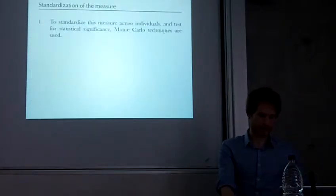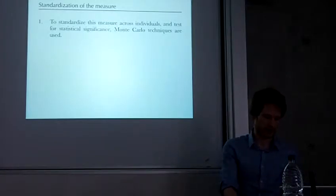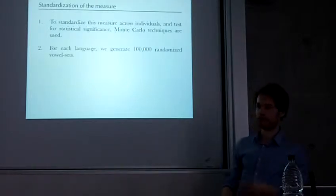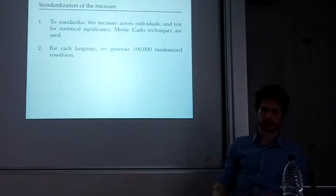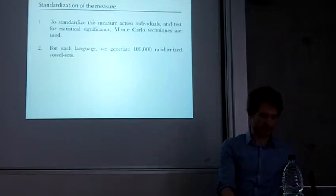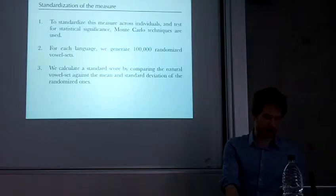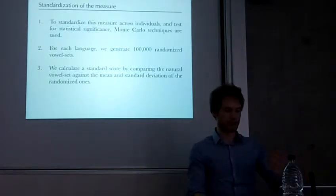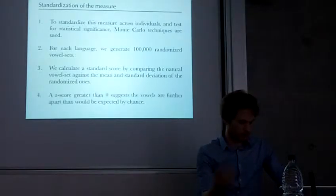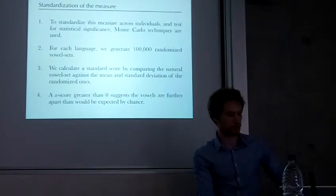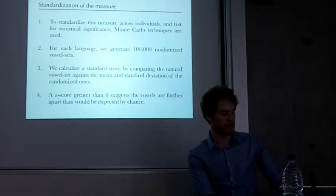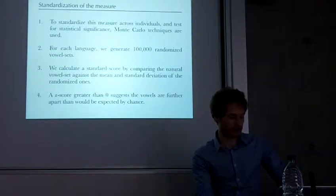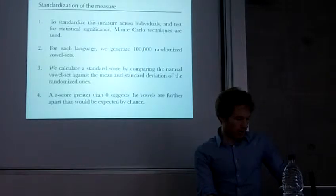Finally, we want to standardize the measure across individuals. I've done this using a Monte Carlo method. For each of the languages, we generate 100,000 random vowel sets. Each one has the same number of vowels, constrained by the same size space. Then we calculate a standard score by comparing the natural language against the mean and standard deviation of the randomized ones. Then we get a standard score, where if it's greater than zero, it suggests the vowels are further apart than expected by chance.